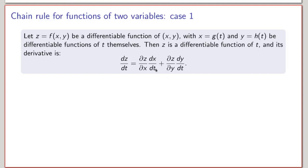We're not going to prove this formula in this video. If you are interested, you can look at the textbook — the proof follows along the same lines as the proof for the chain rule in the case of functions of a single variable. One thing to note is that this expression is very logical: the derivative of z with respect to t equals the partial derivative of z with respect to x times dx/dt, and the same thing for y, then adding up the results. So it's easy to remember because it just makes sense.